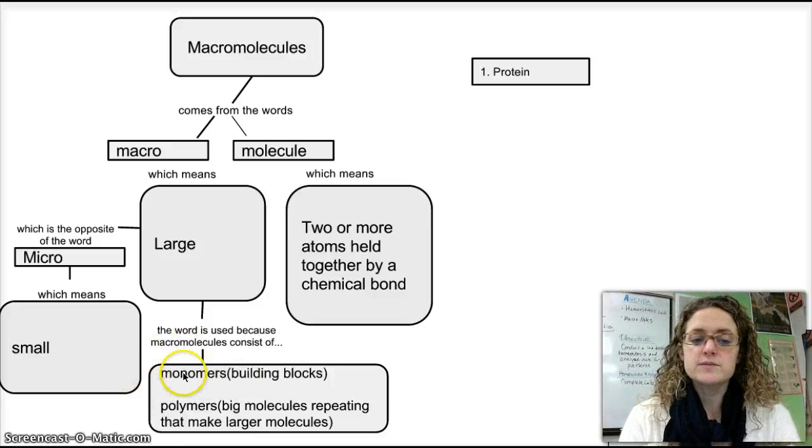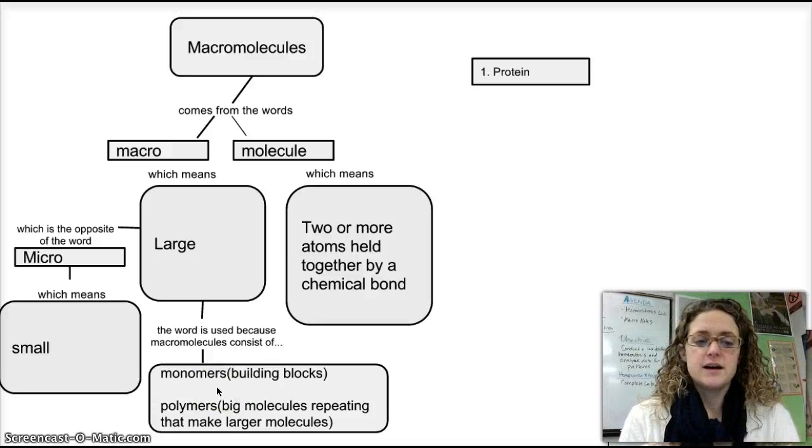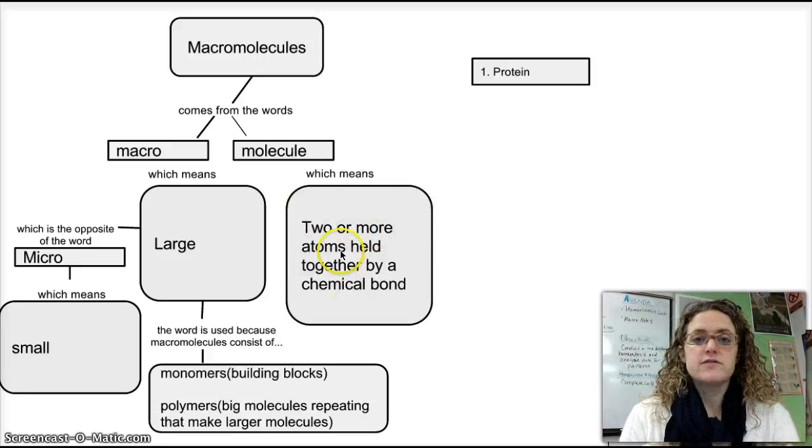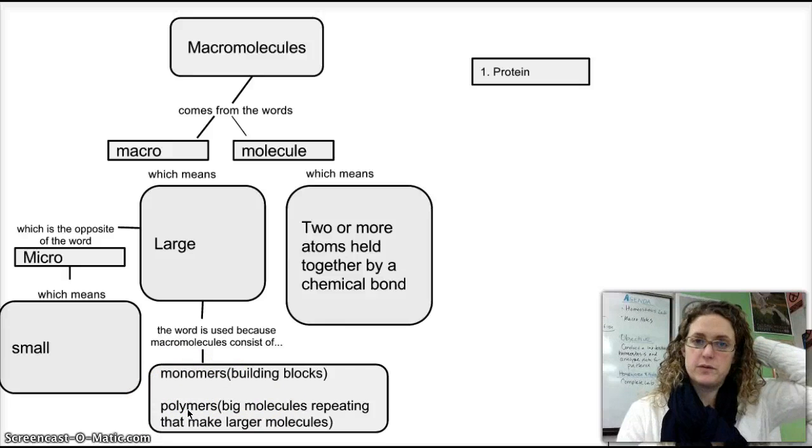But know these two terms. Monomers are the single units. They're still molecules of many atoms held together. But once you glue these building blocks together, you get a big molecule made up of the polymer.